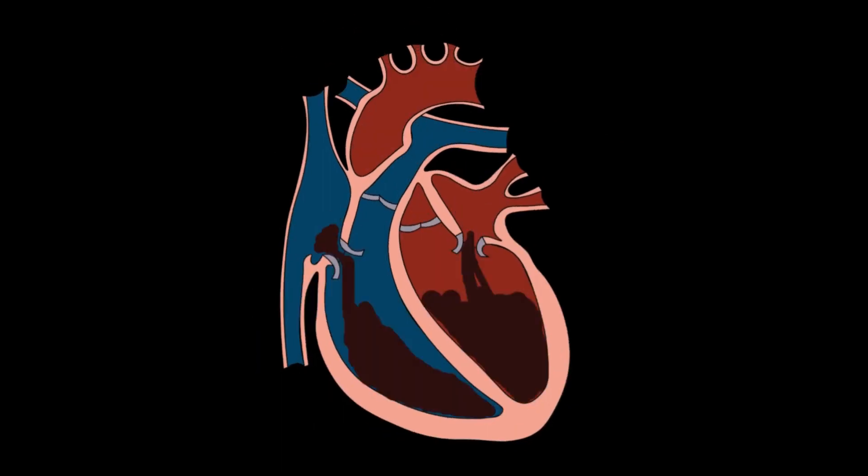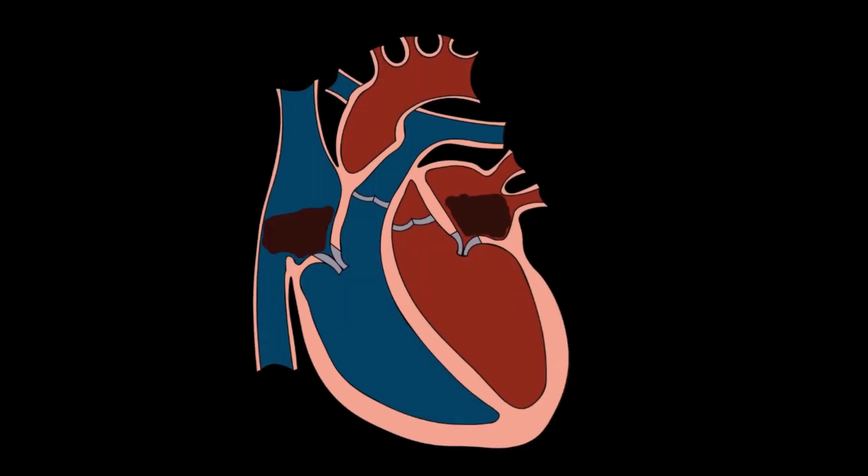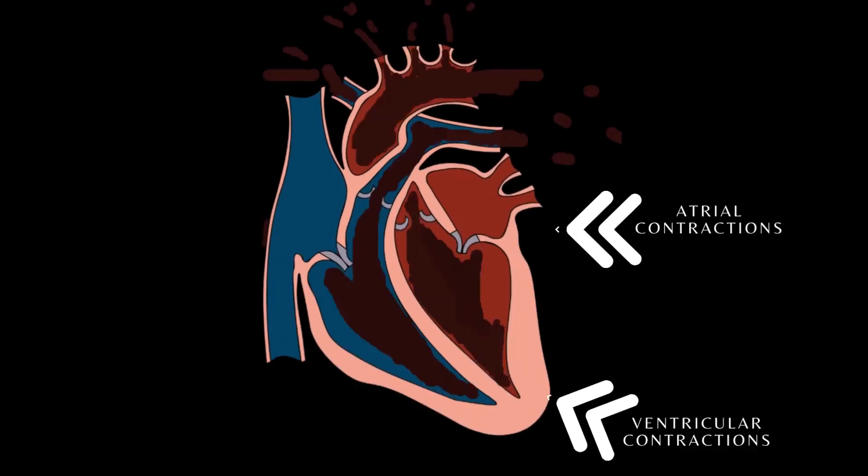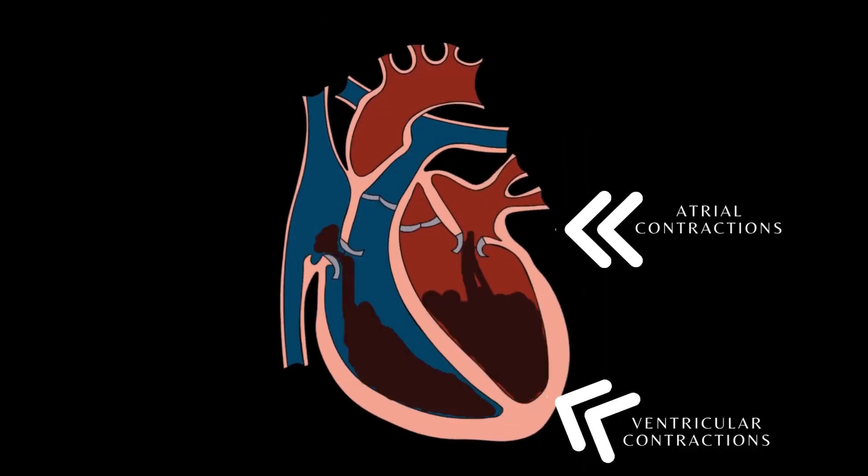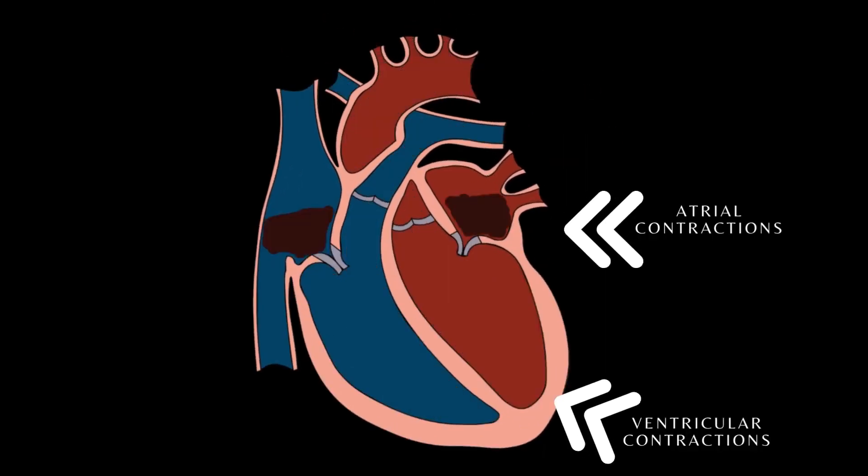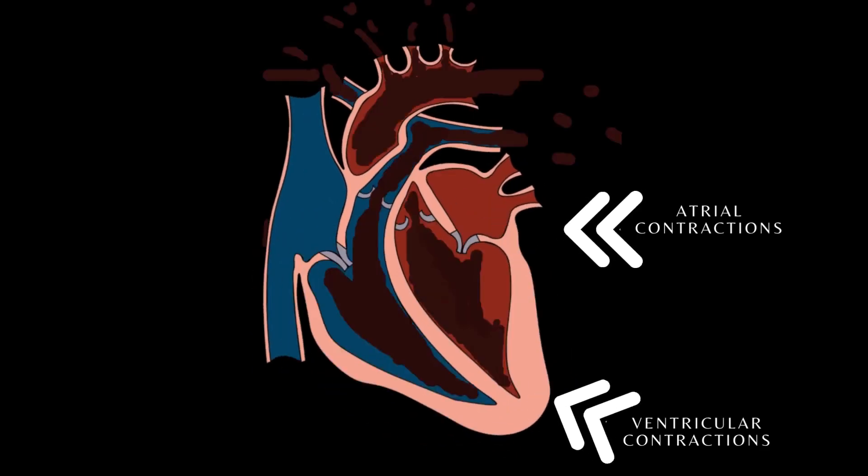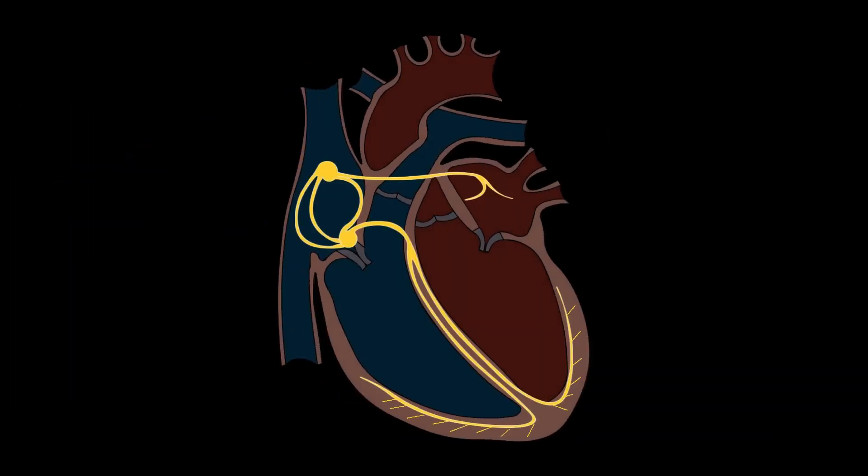This is done in an efficient manner so that both atria contract together before the ventricles. For the heart to pump blood efficiently to the systemic and pulmonary circulations, the events in the cardiac cycle must be coordinated and in synchrony. Let's look at the anatomy of the heart conduction system.